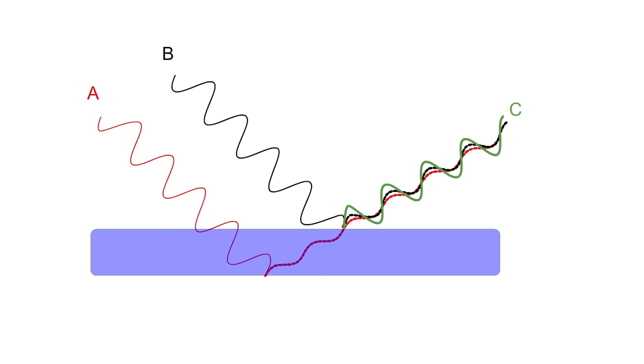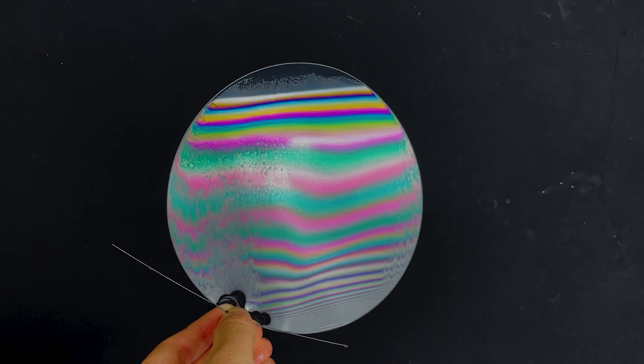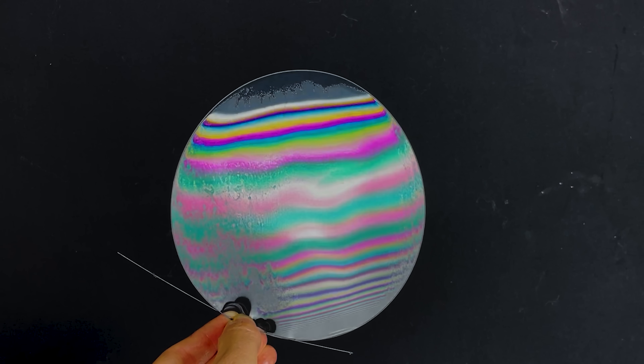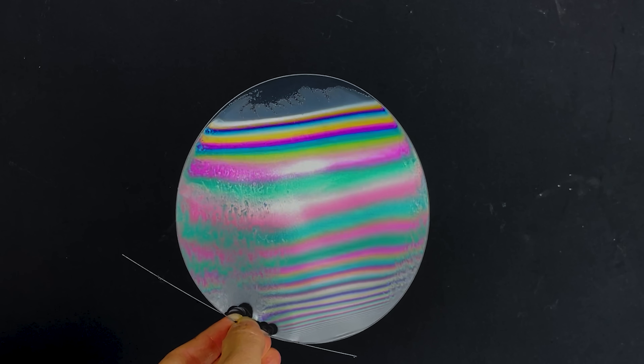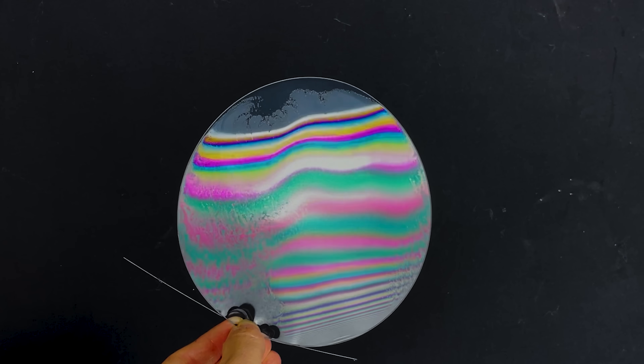And because this is wavelength dependent, the different colors of light that make up the white light in the room have different places where they'll constructively and destructively interfere. So you get a colorful pattern like you see all the time on bubbles.